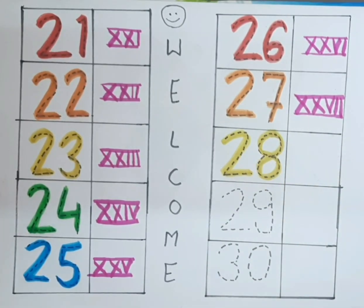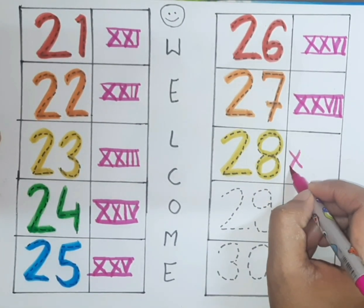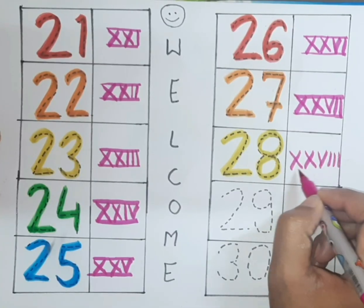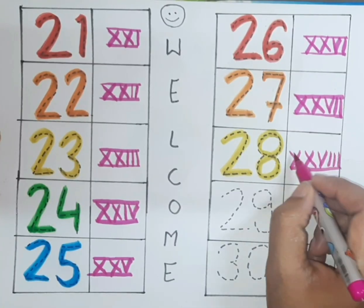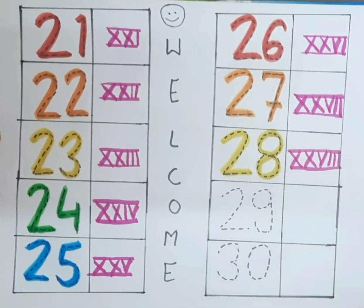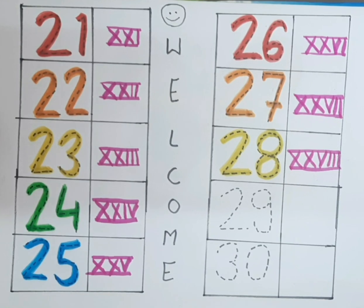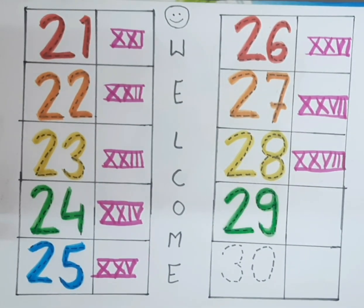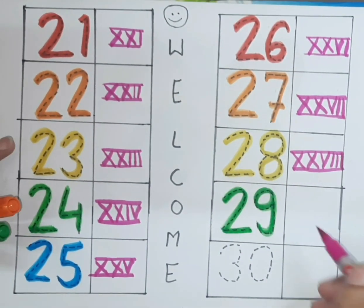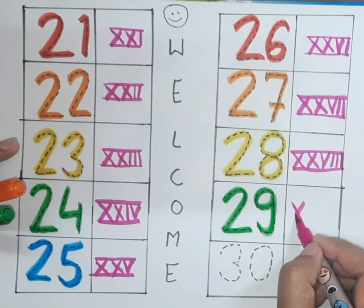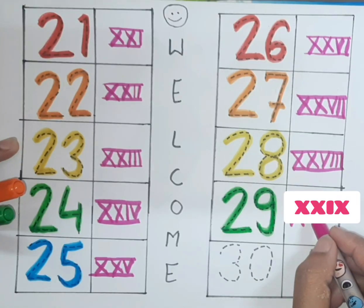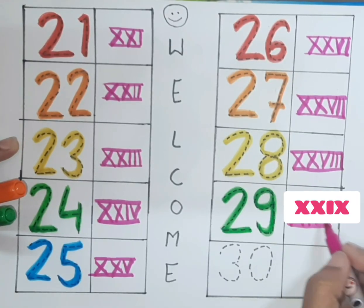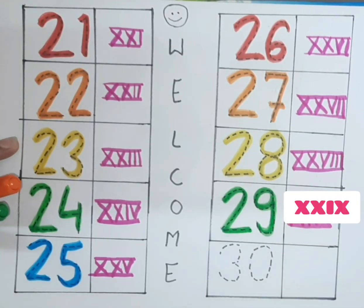How to write it? Double X, V and triple I. This is twenty eight. In numeral, next twenty nine. How to write in roman? Double X, I, X.